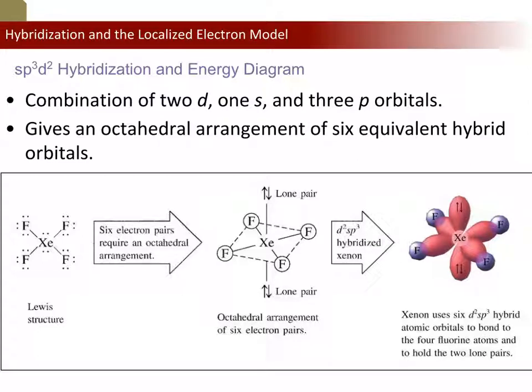You can see how an element expands its octet by pulling in available orbitals and hybridizing them. It might seem like something we made up after the fact to account for bonding — and honestly, to some extent that's true. It's something chemists created to help explain why things bond, rather than the explanation coming first. We explain it first and justify their existence afterwards, which seems kind of backwards.